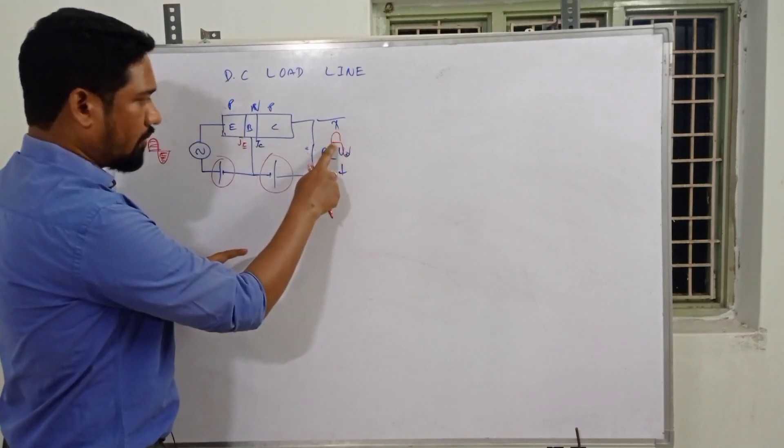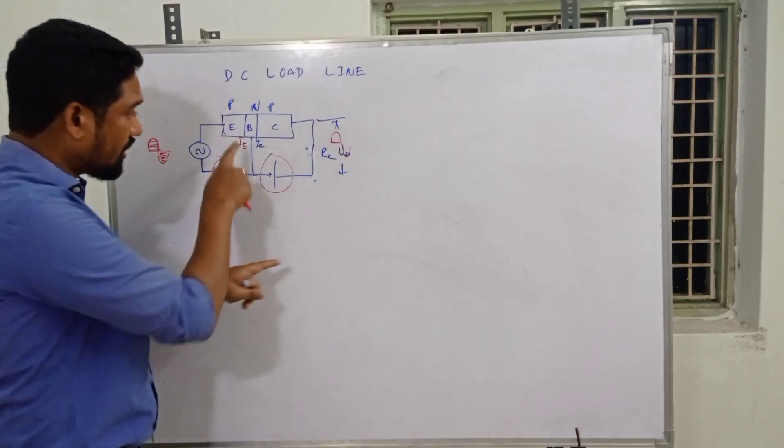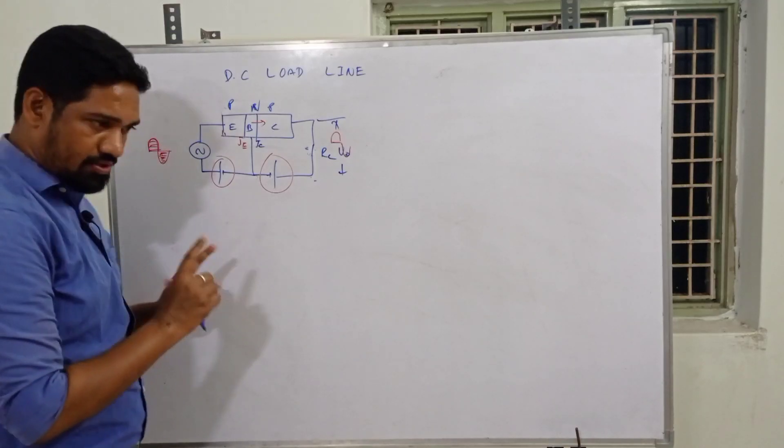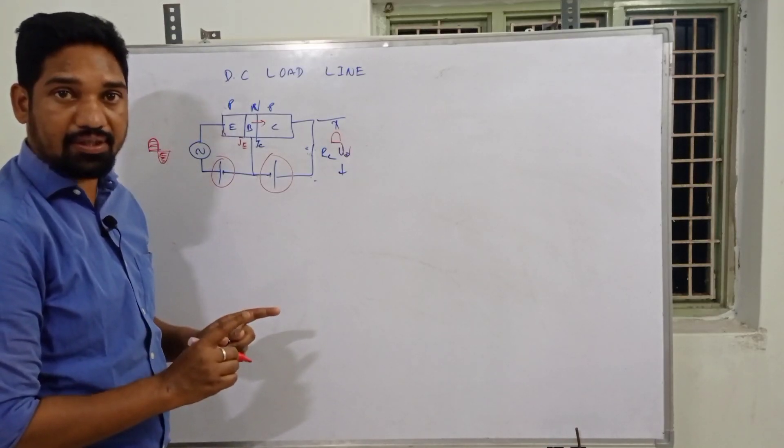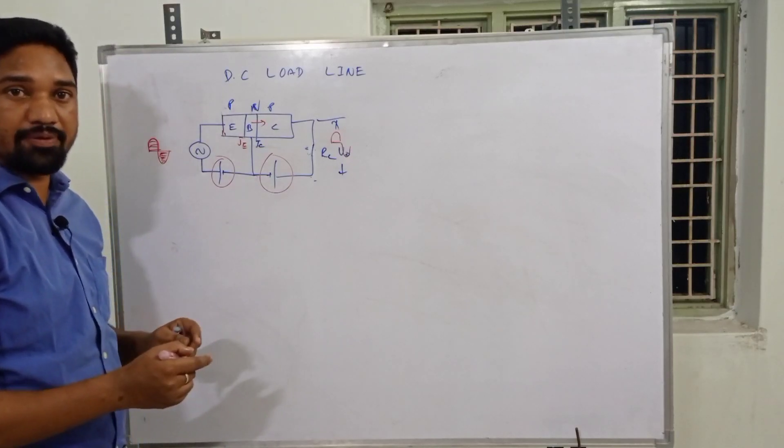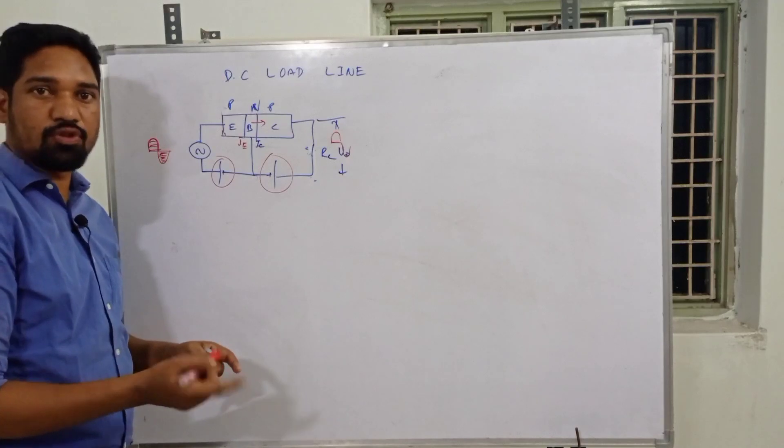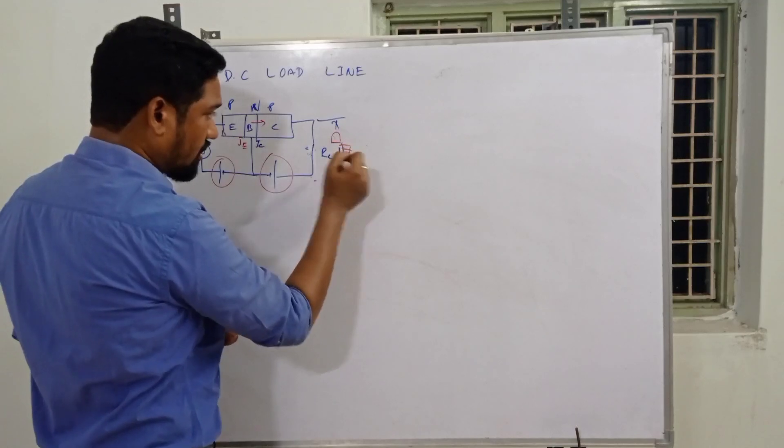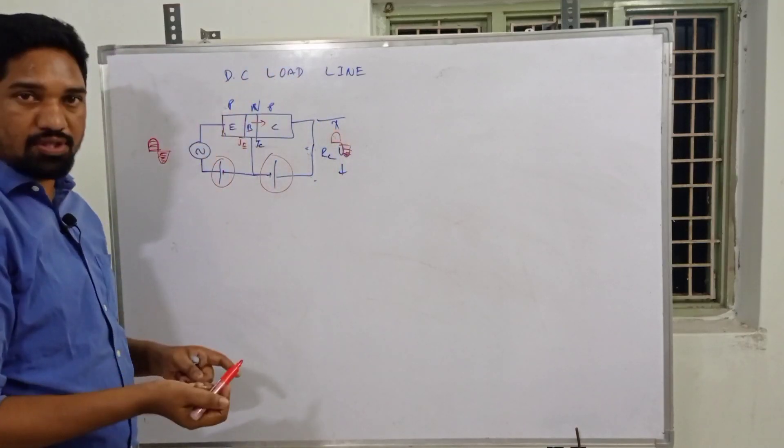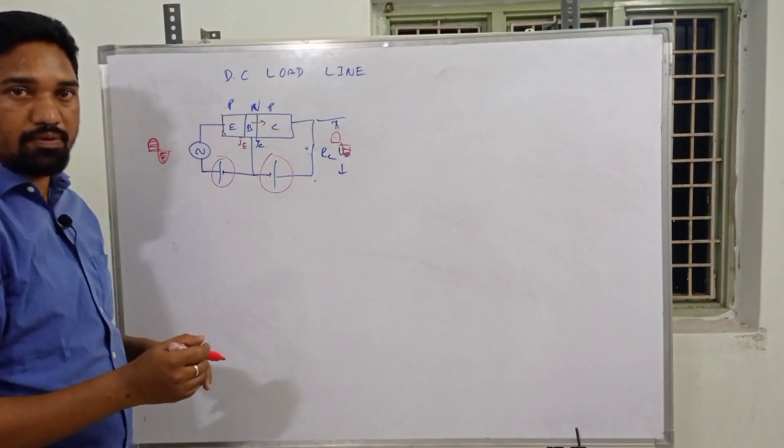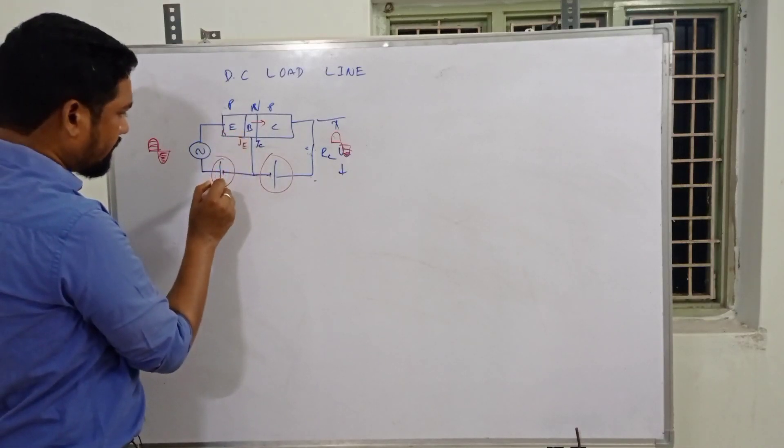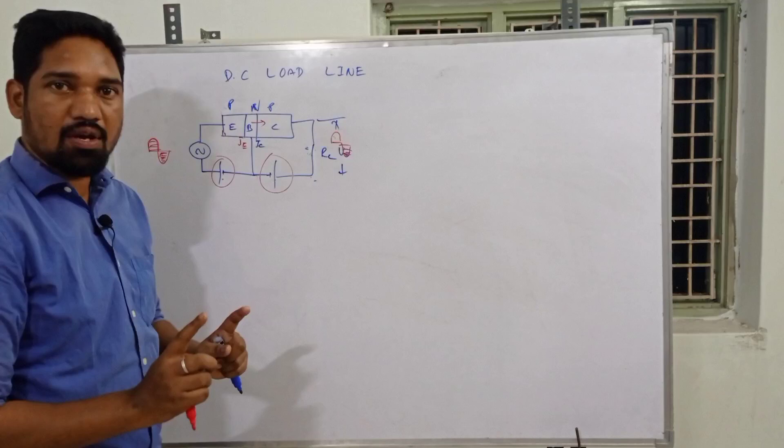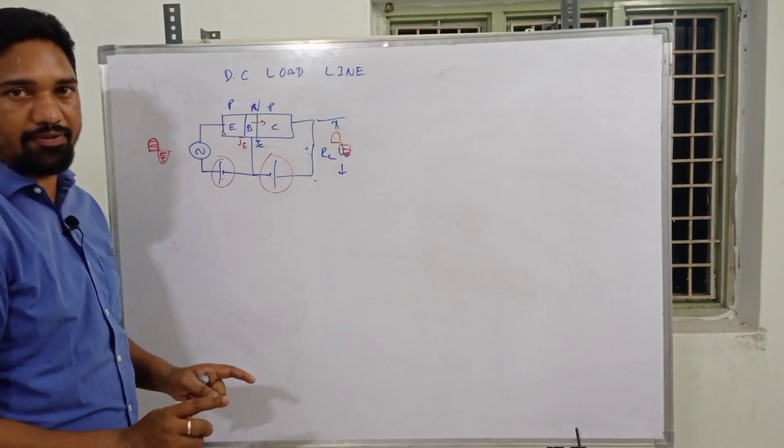So the straight answer is: Why do we need biasing? For faithful amplification - to obtain faithful amplification without any distortion. The emitter junction is always kept forward biased and the collector junction is kept reverse biased to avoid distortion.